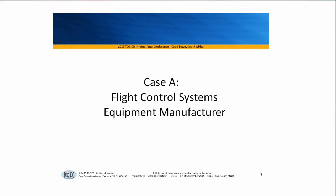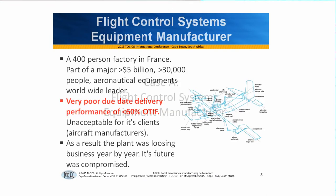Case A: flight control systems. These are the things where you hope that when the pilot pulls the stick, the plane goes up; push it down, it goes down; left and right. This is a case in one of the very largest European manufacturers of aeronautical equipment — engines and stuff. Over five billion euro in sales, over 30,000 people, 60 factories. They asked me to come into what was their worst factory within those 60.